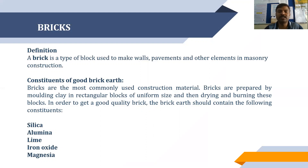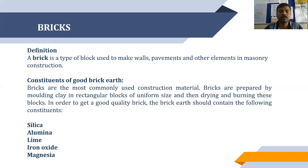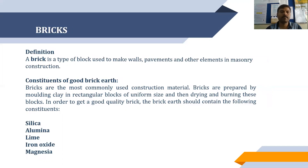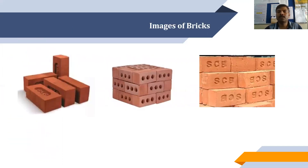Bricks are the most commonly used construction material and are prepared from clay in a rectangular block of uniform size. The major constituents of brick are silica, alumina, lime, iron oxide, and magnesia. All these constituents give specific properties and features to the brick. Here are some images of different kinds of bricks — the first is the conventional type, the second is the modular type, and so on.